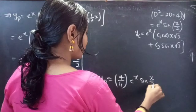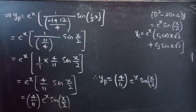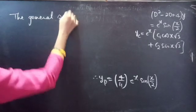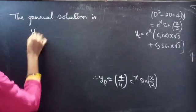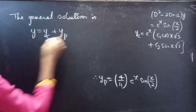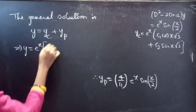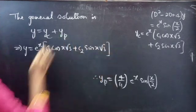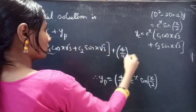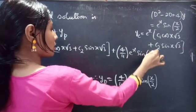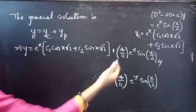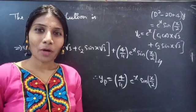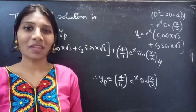We have found both yc and yp, so the general solution is y = yc + yp = e^x(c1·cos(√3·x) + c2·sin(√3·x)) + (4/11)e^x·sin(x/2). This completes the problem. We have seen a problem from higher order linear differential equations in this video. Hope you understand — see you in the next video, bye bye!